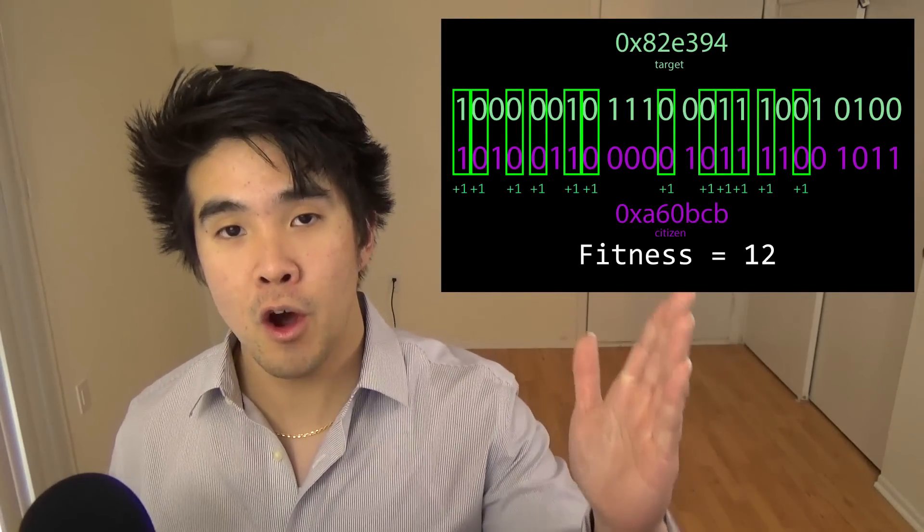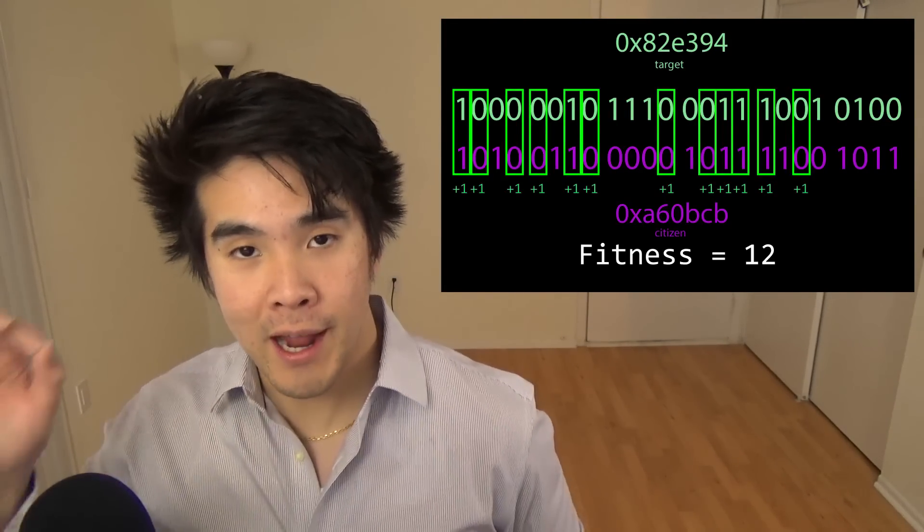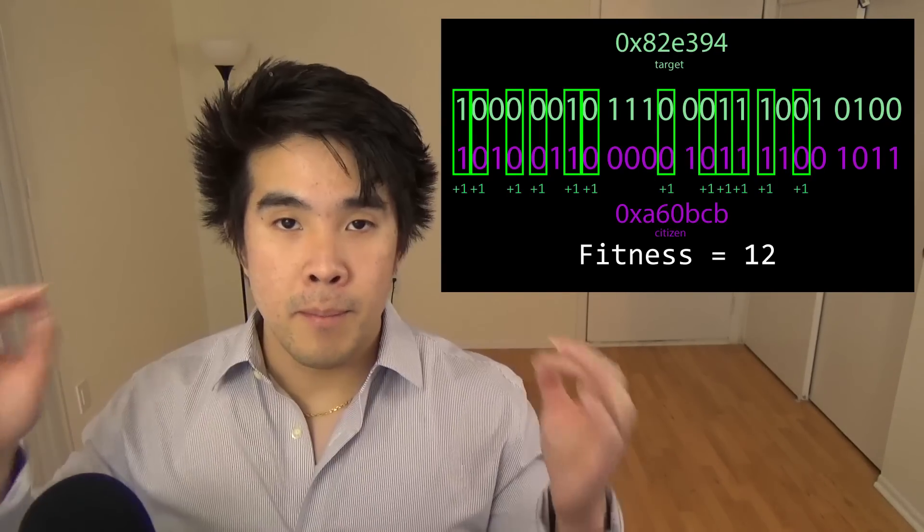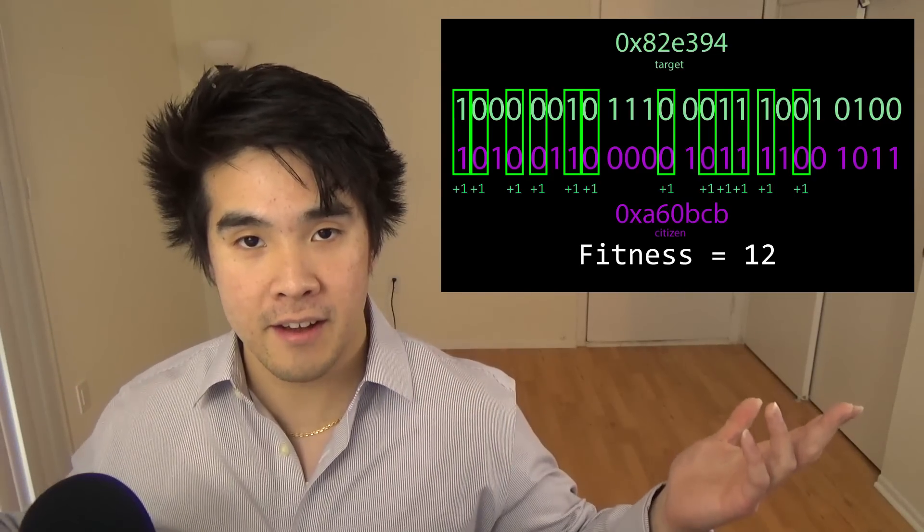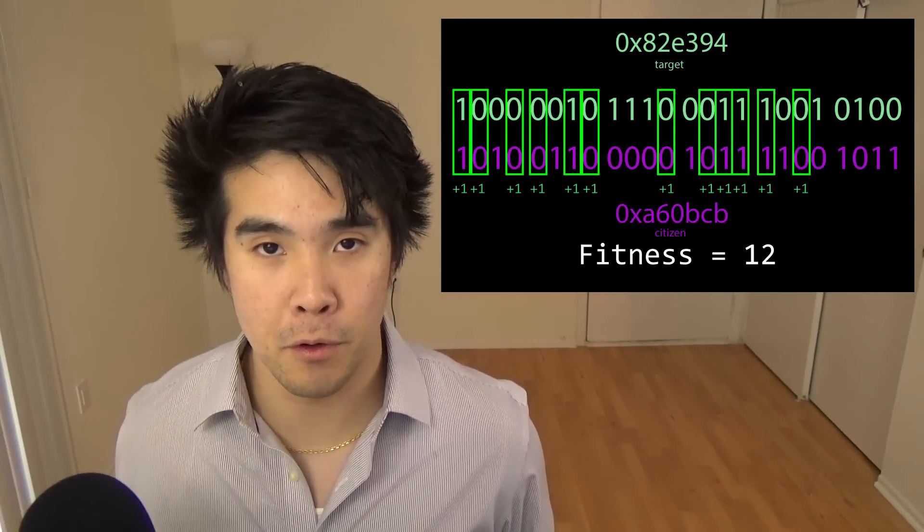For example, this citizen has a shade of purple. When we compare the genotype of the citizen to the target, we go bit by bit, and for each place that matches, we're gonna add one, and if it doesn't match, we don't add anything. Meaning that a citizen that has the most matches is going to be the most fit, and is considered the most like the shade of green that we want the computer to display.